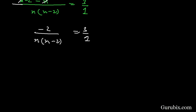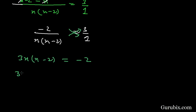Now we shall cross multiply. This gives 3 times x(x minus 2) equals to minus 2. Expanding: 3x squared minus 6x equals minus 2. Bringing minus 2 to the left-hand side, we get 3x squared minus 6x plus 2 equals to 0.